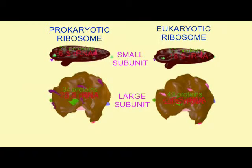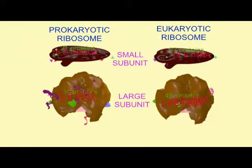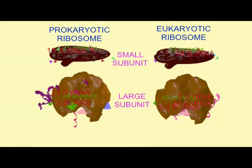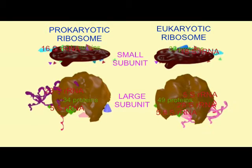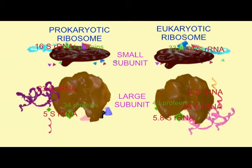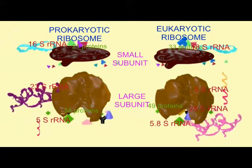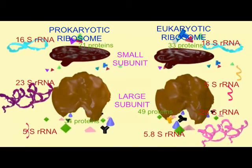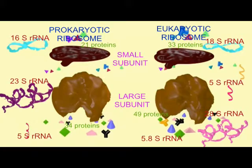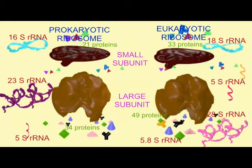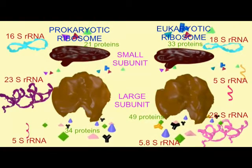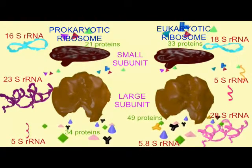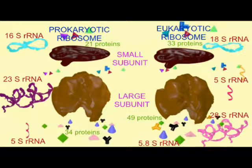In prokaryotes, around 21 proteins are associated with the small subunit, and 34 proteins with the large subunit. While in mammalian eukaryotes, about 33 proteins are associated with the small subunit, and 49 proteins with the large subunit. There are variations in the ribosomes among different eukaryotic groups, such as the number of proteins associated with the subunits.